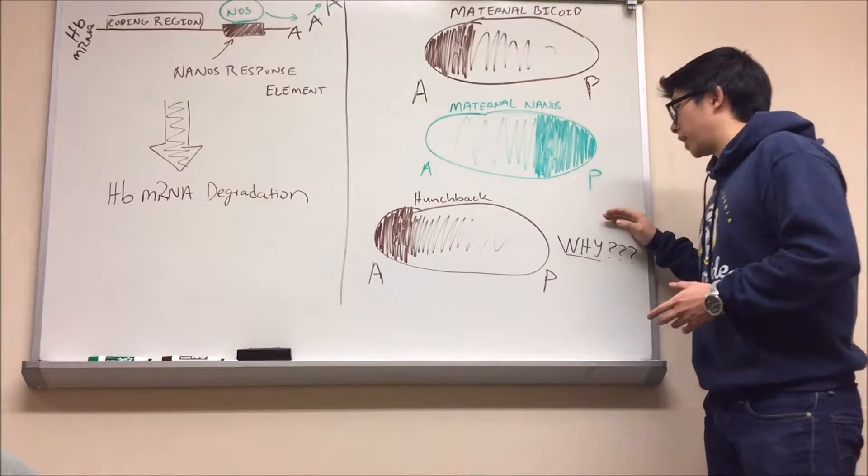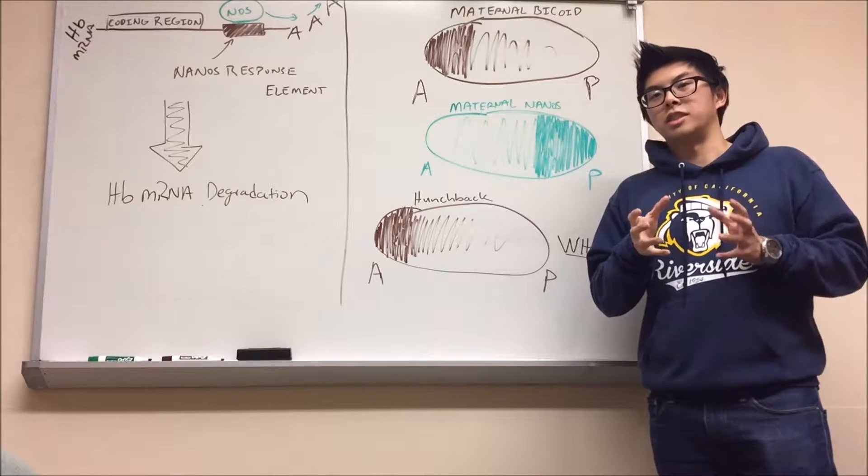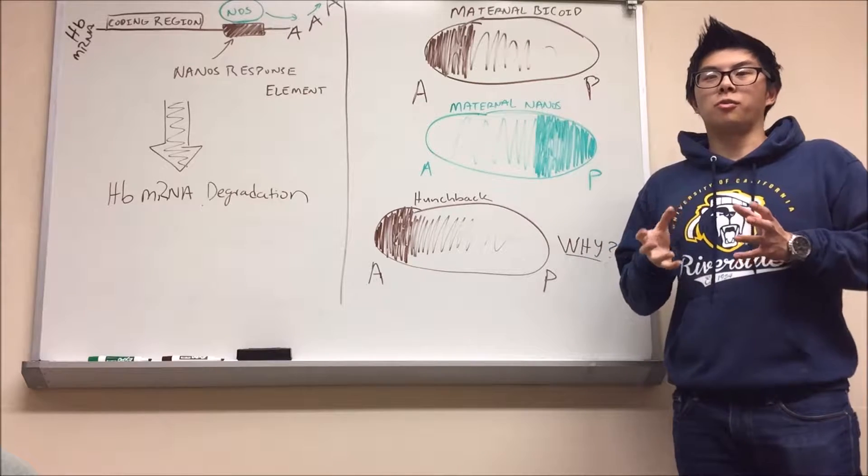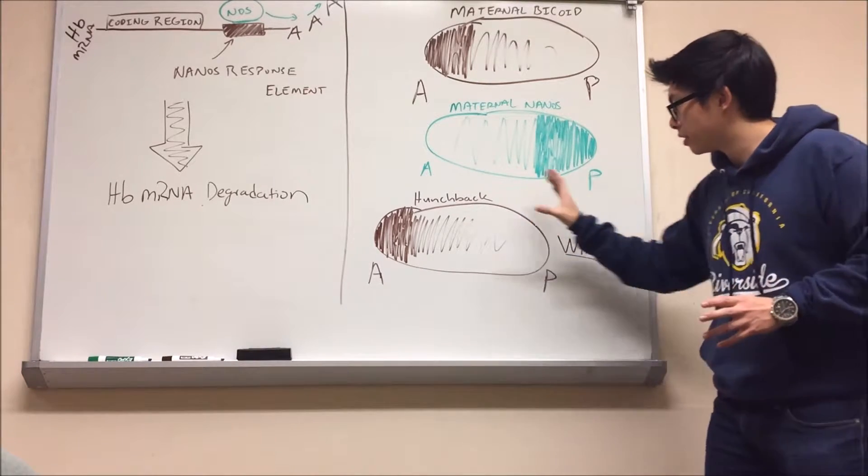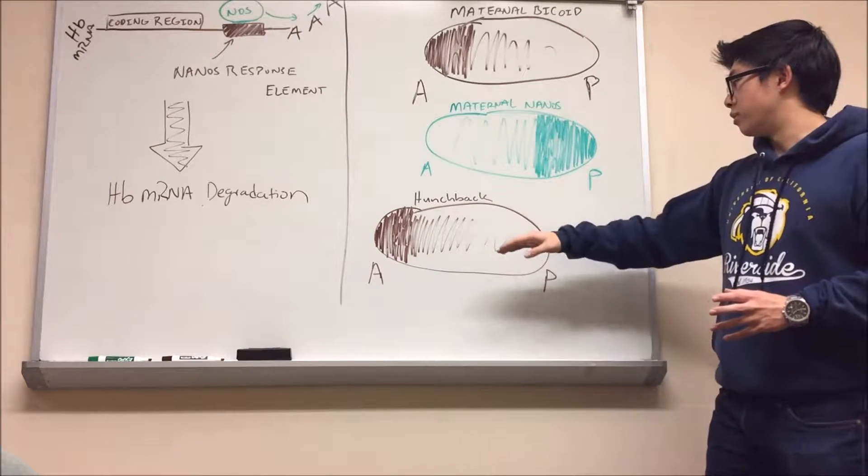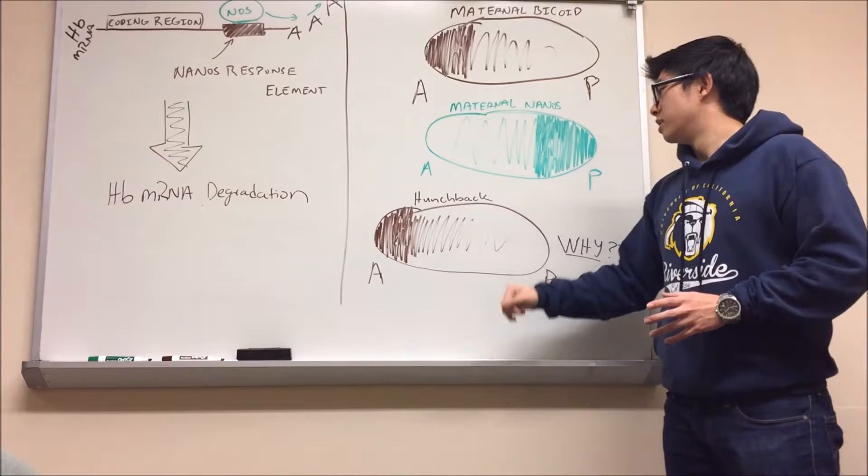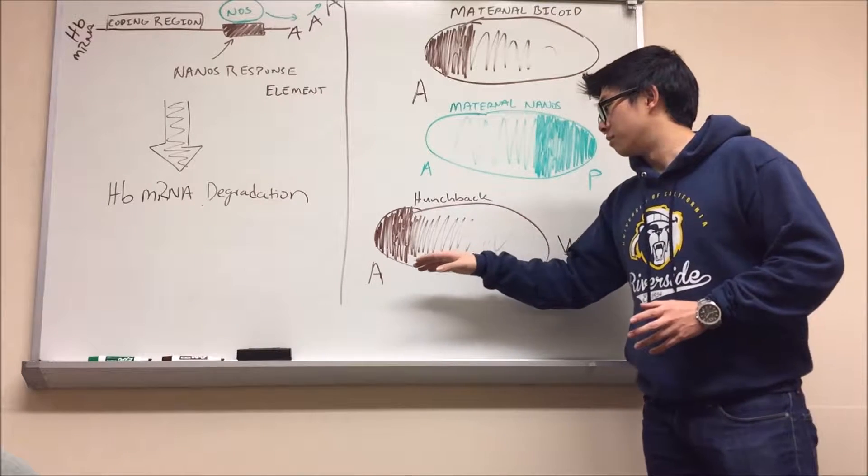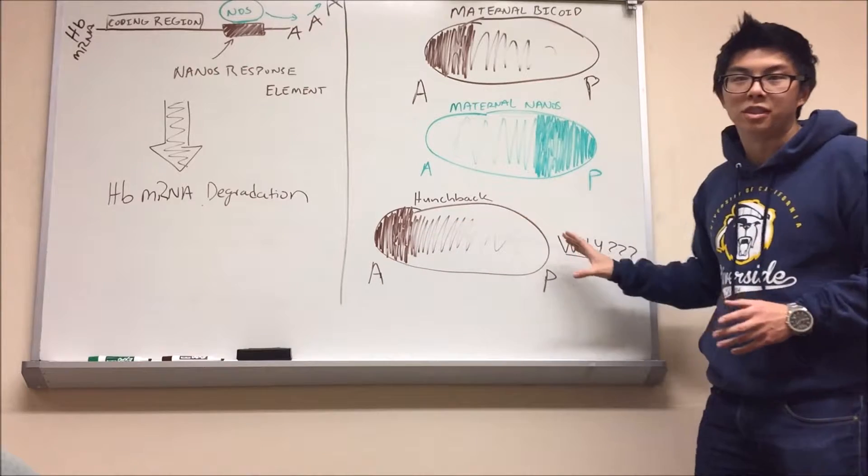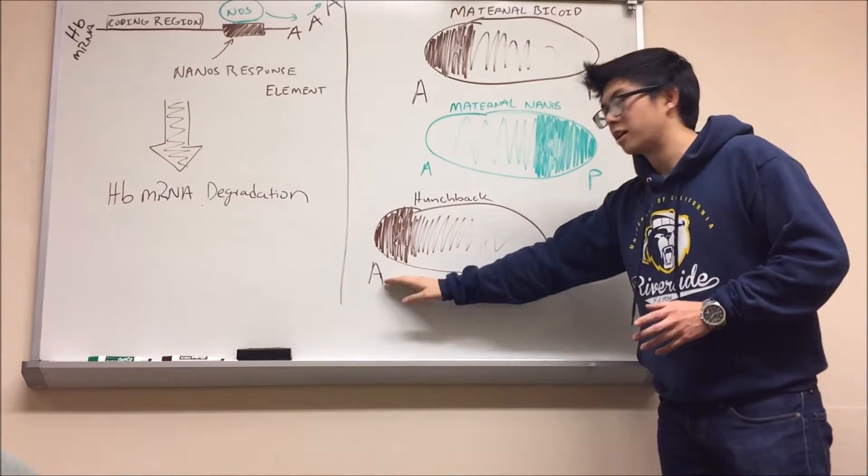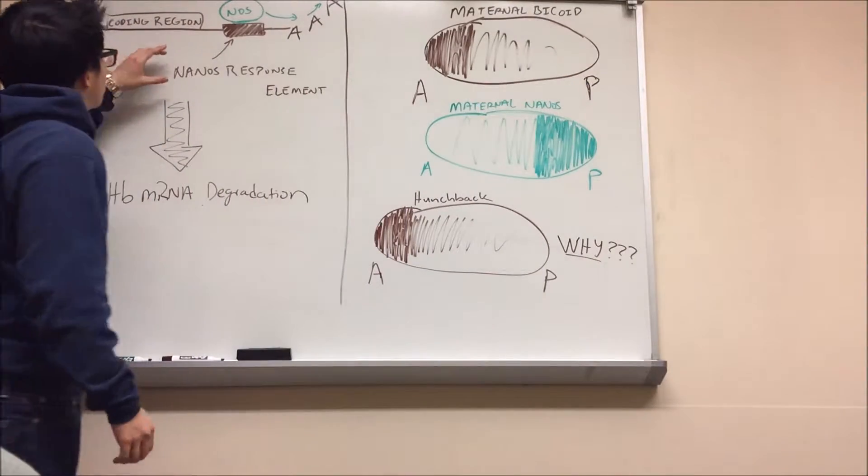Then there's also Hunchback. Hunchback is where the interesting stuff happens. Hunchback normally is expressed evenly throughout the embryo. However, when you look at it, Hunchback is only expressed at the anterior end. So why is it that maternal Hunchback mRNA is deposited evenly throughout the embryo, however, you only see it there? Well, the reason for that is what I drew right here.